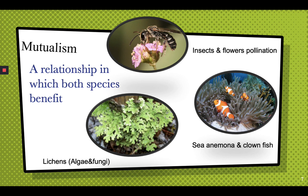Lichens are a mixture of algae and fungi living together — the fungus takes photosynthetic food from the algae, and the algae take the hyphae from the fungus. The clownfish and sea anemone are also an example of a mutualistic relationship: the clownfish attracts more fish to the sea anemone, while the sea anemone protects the clownfish from other large predators.